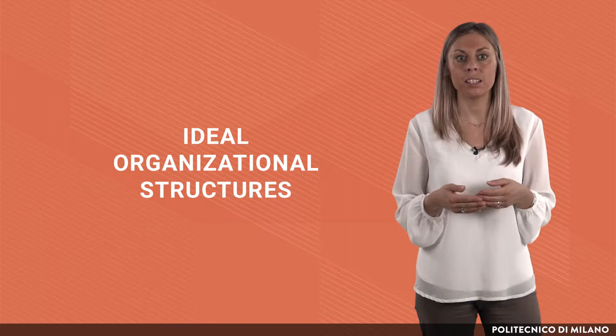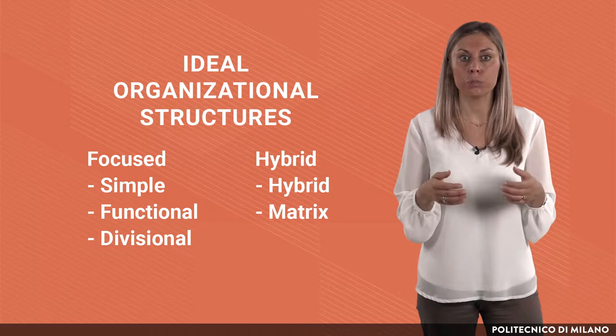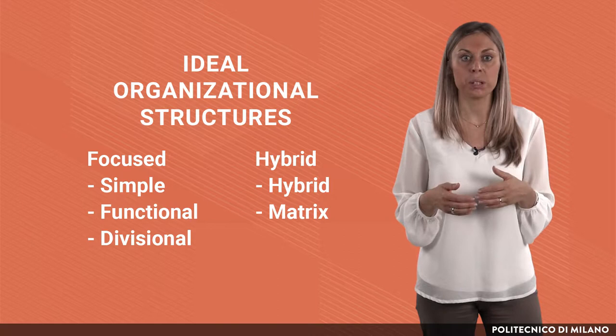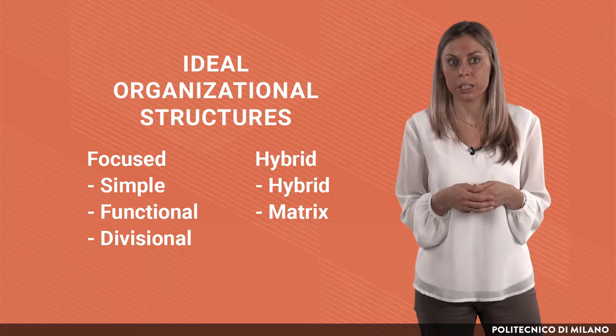On the basis of the combination of these choices, we could identify five main ideal organizational structures: three focused ones — respectively simple, functional, and divisional — and two hybrid ones. Each of those organizational structures has different pros and cons and is selected on the basis of the company's strategy as well as environment. The implementation and reality of the organizational structure implies an adaptation to the real context in which the company operates.